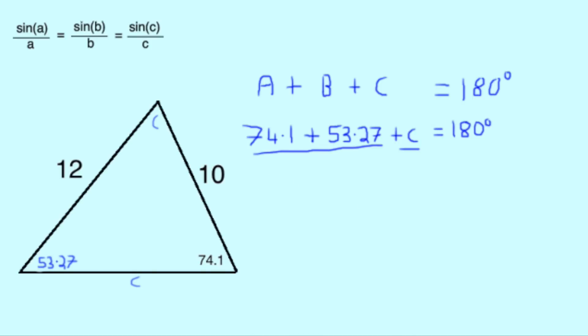As you can see in this example, A and B together make 127.37, therefore 180 take away 127.37 equals 52.63. So, our angle B is 52.63 degrees.